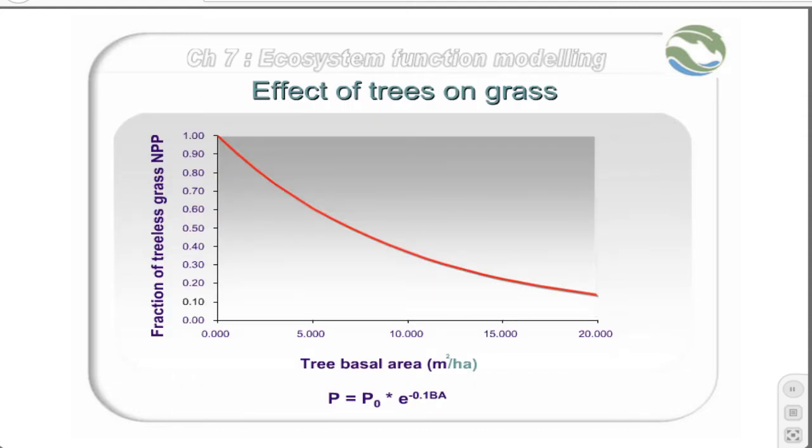In savannas, the presence of trees has a powerful suppressive effect on grass production due to competition. This effect is almost always non-linear. The first increments of tree biomass have a greater suppressive effect than the last ones. The degree of curvature depends on site conditions. A form for this curve can be derived from first principles regarding the way trees and grass carve up the space in savannas. Here is a simplified solution for a particular set of assumptions regarding tree canopy radius and rooting radius. In this equation, P is the fraction of grass primary productivity in relation to P0, the productivity of an untreated area, and BA is the total basal area of trees in square metres per hectare.